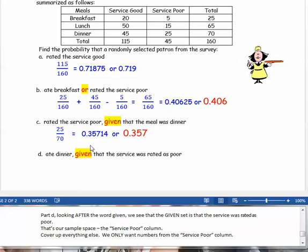Part d, looking after the word given, we see that the given set is that the service was rated as poor. So that is our sample space: the service poor column. Cover up everything else. We only want numbers from the service poor column.